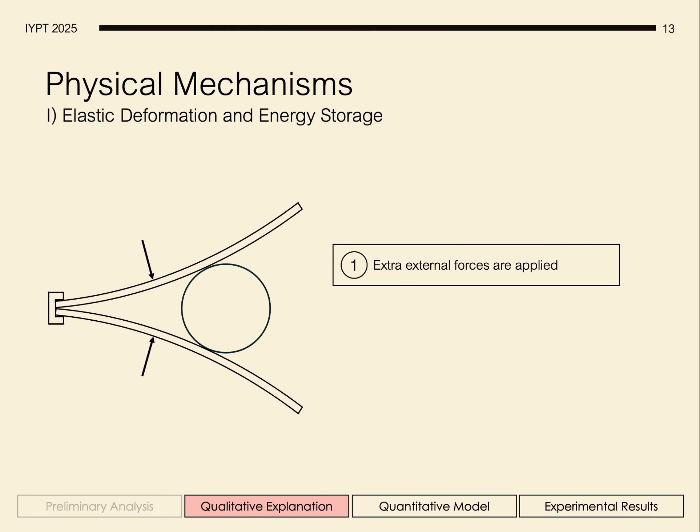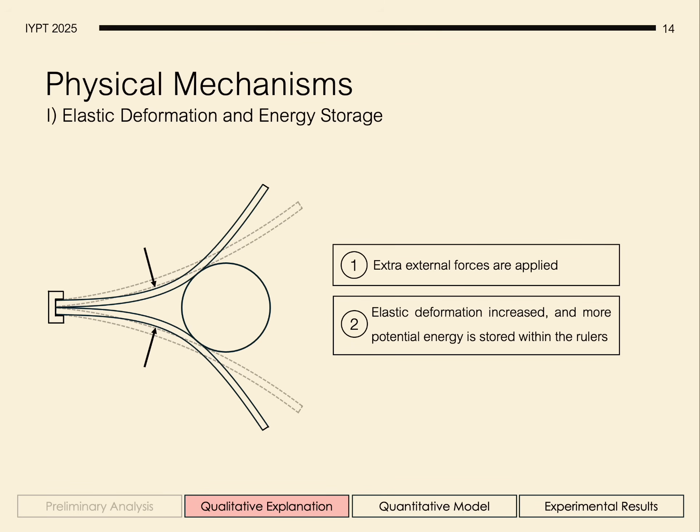External forces are first applied to the surface of the rulers. And deformation increases in accordance with the principles of elasticity, where the materials Young's modulus and geometric parameters determine the degree of deformation. Here, more elastic potential energy is stored within the rulers.